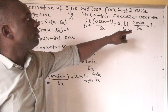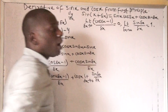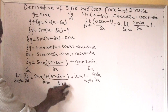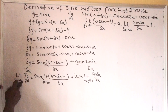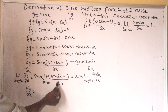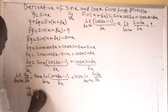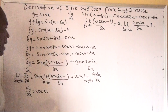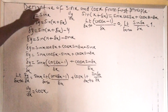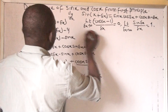Applying these results: the first term gives sin x times 0, which is zero, and the second term gives cos x times 1, which is cos x. So as delta x tends to 0, delta y over delta x becomes dy/dx. Therefore, if y equals sin x, the first derivative is cos x. Now let's establish the derivative for cos x.